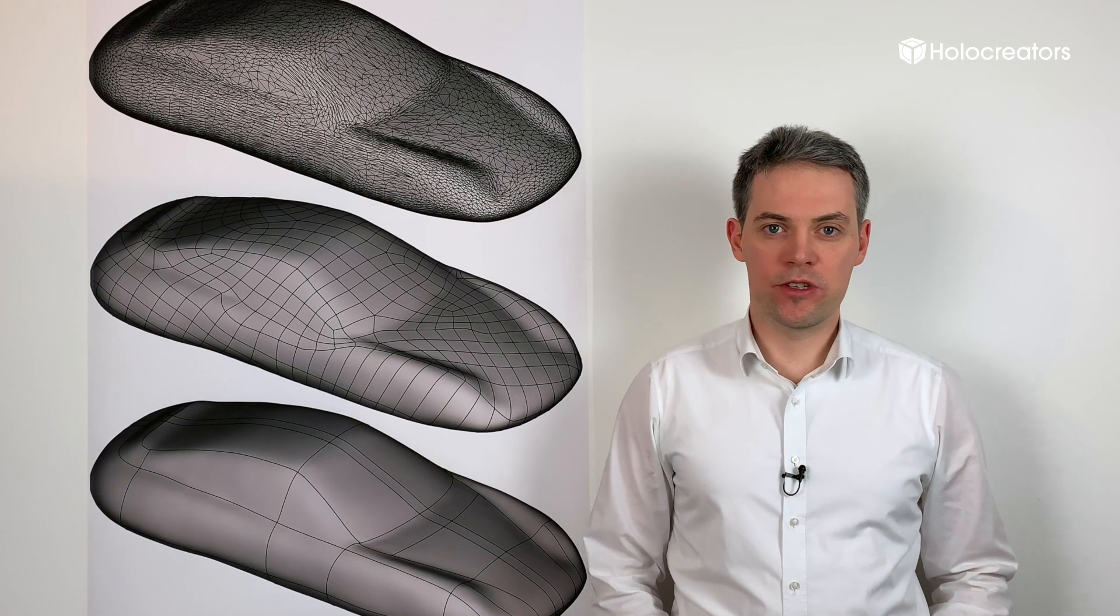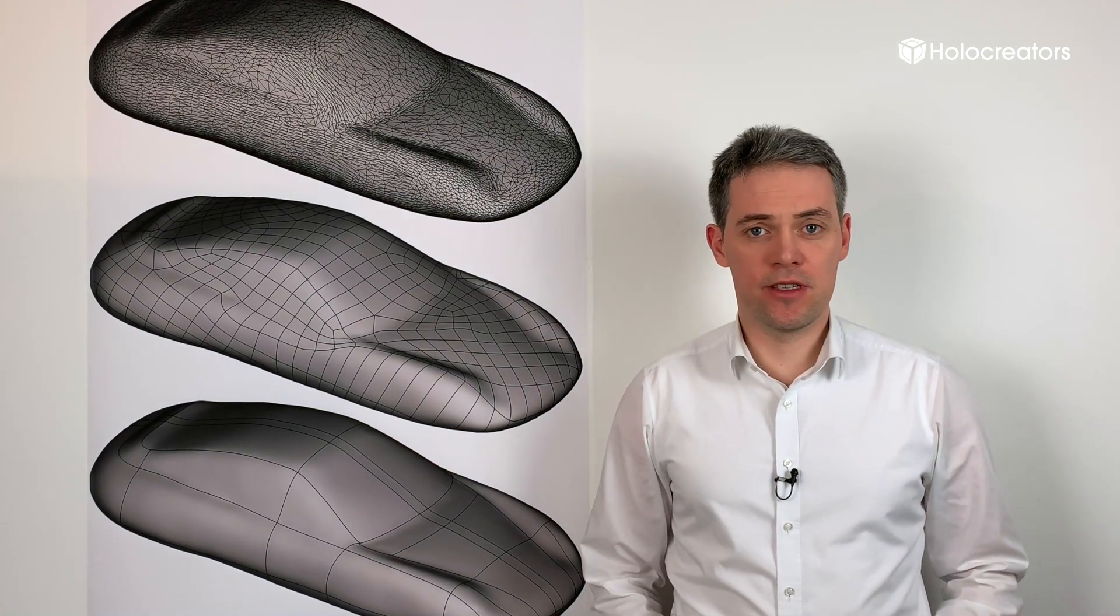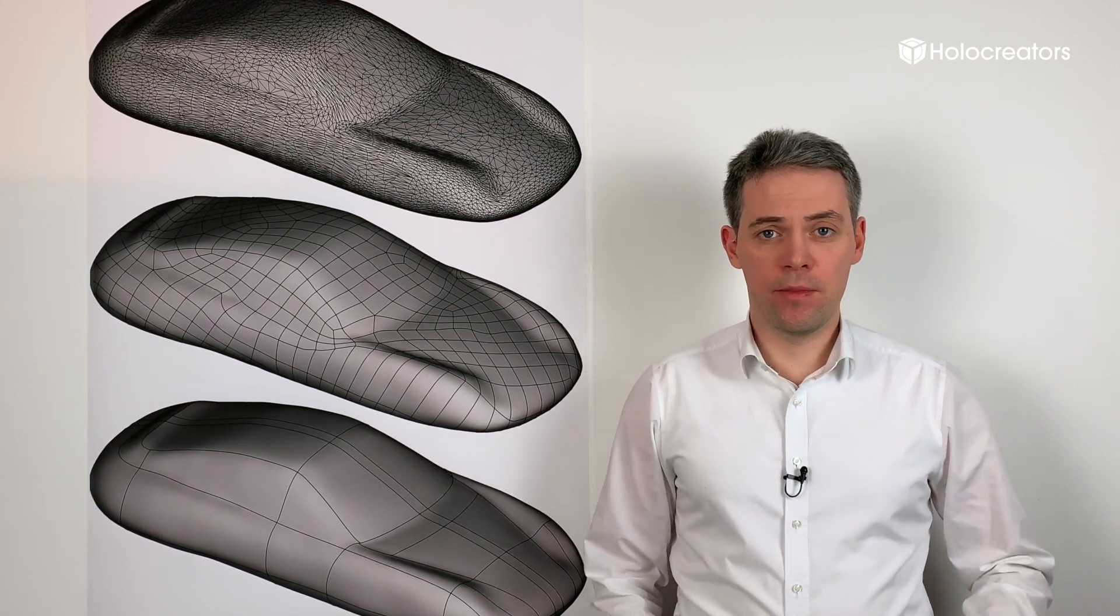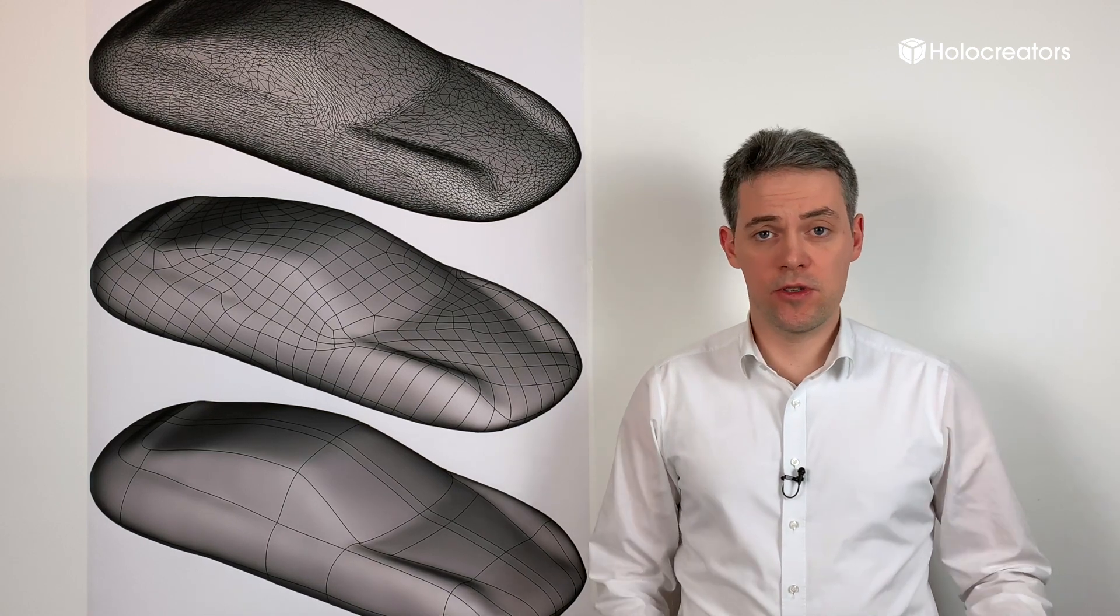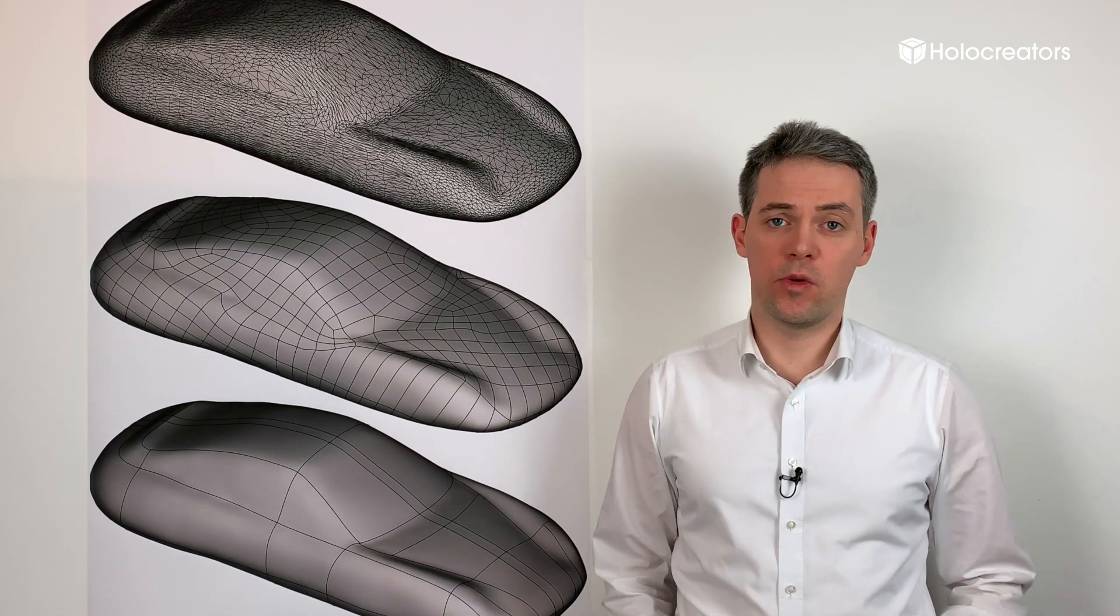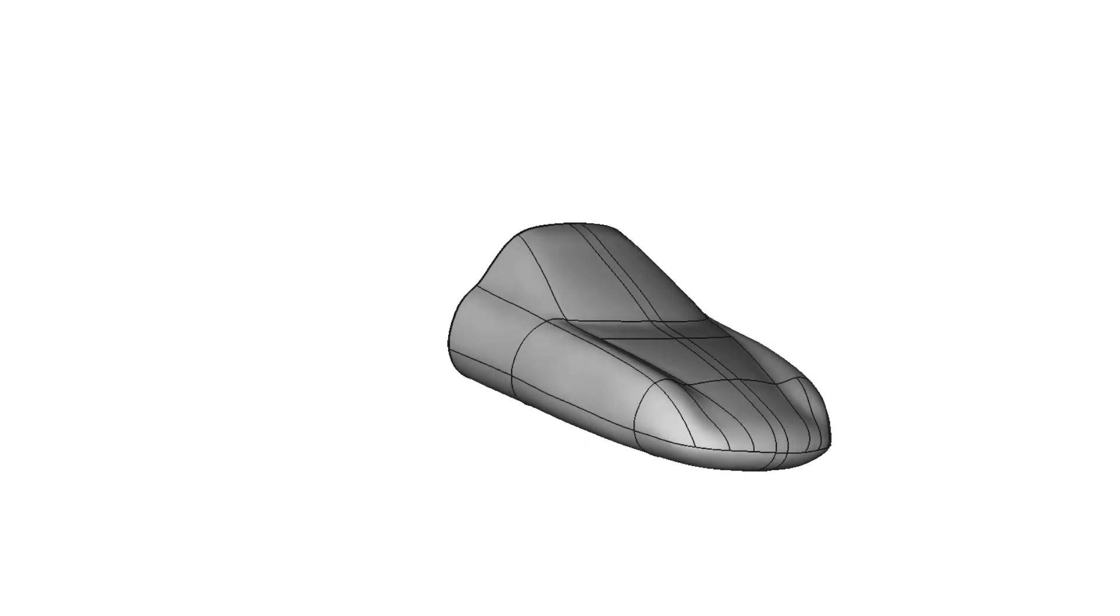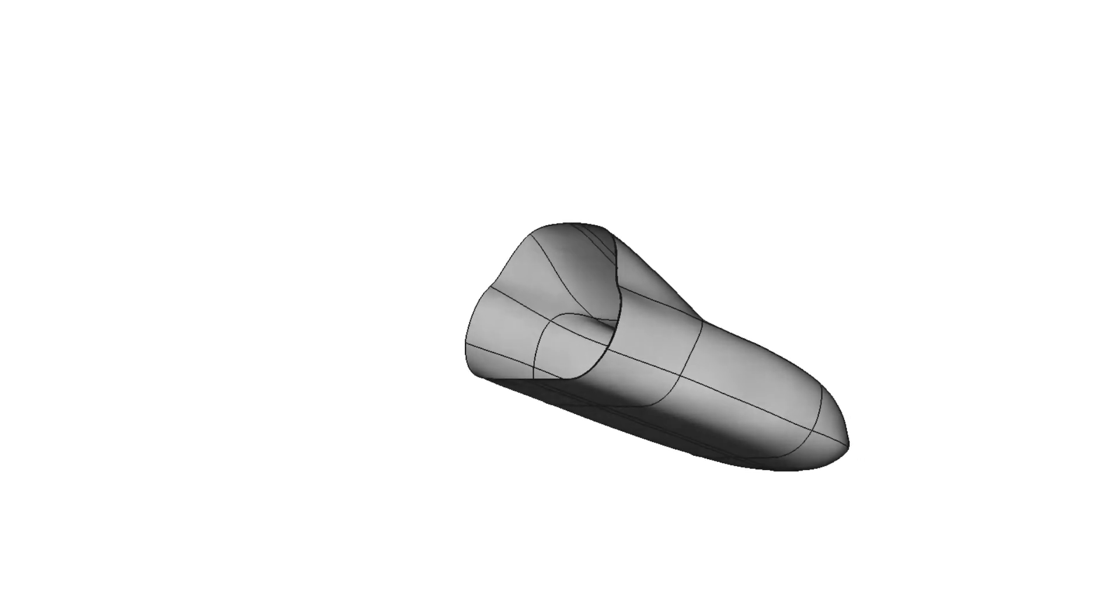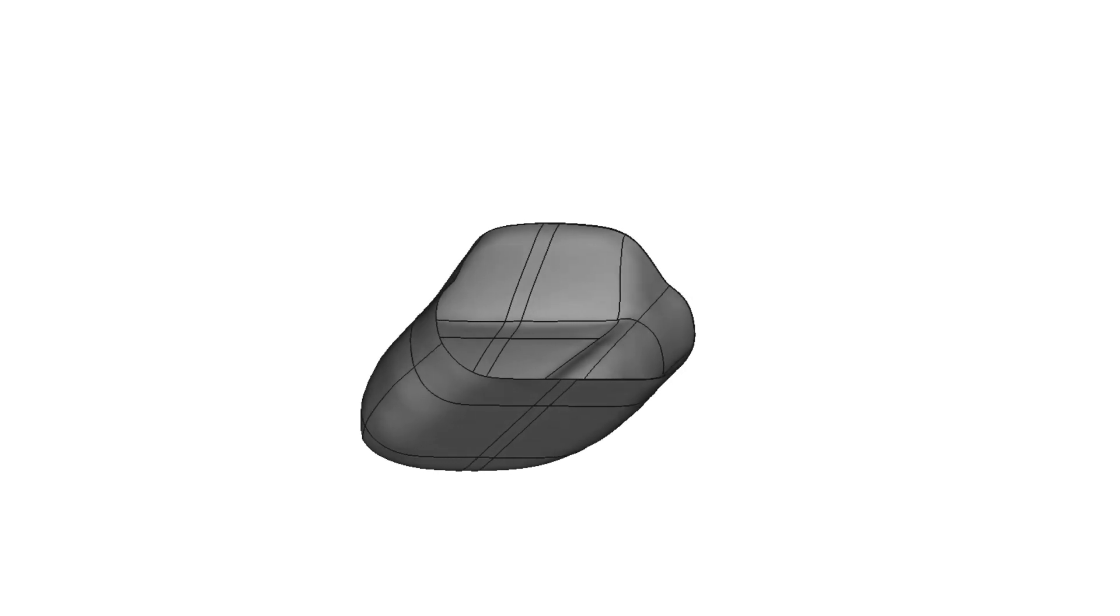The surface model which is created with reverse engineering software is normally just an empty hull, so it's not a solid yet. Only by giving it a certain thickness or by closing the surface model can you create a solid model. For demonstration purposes I've prepared this surface model here. It's the sports car model you already know, cut in half so you can look inside. You can see it here in the animation turning.